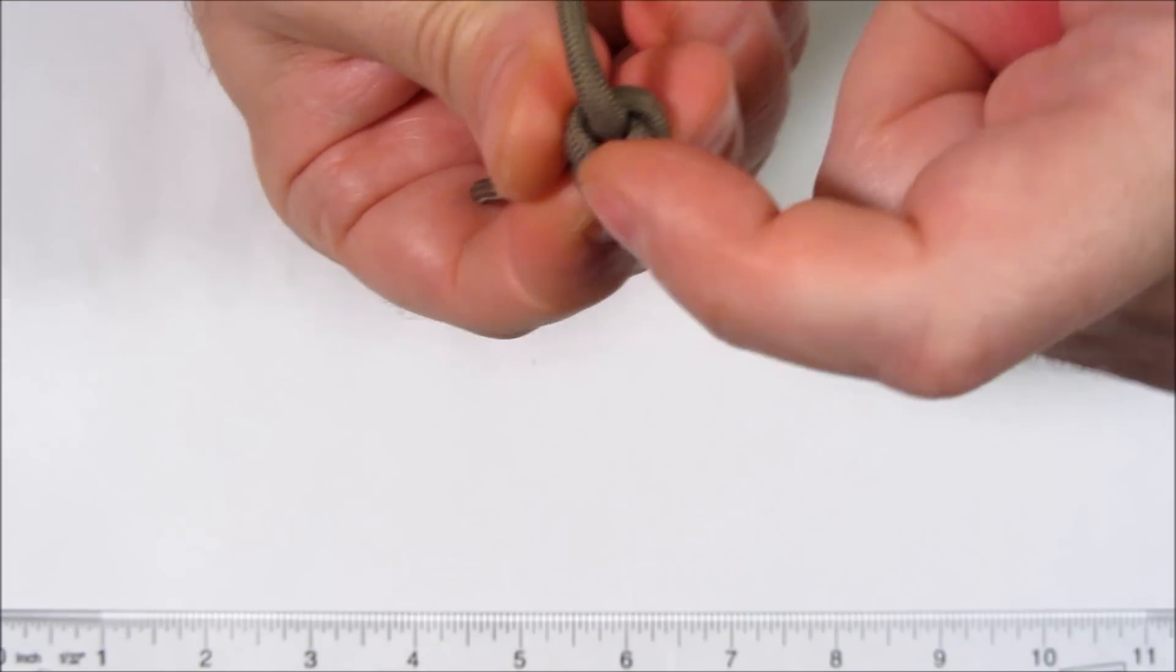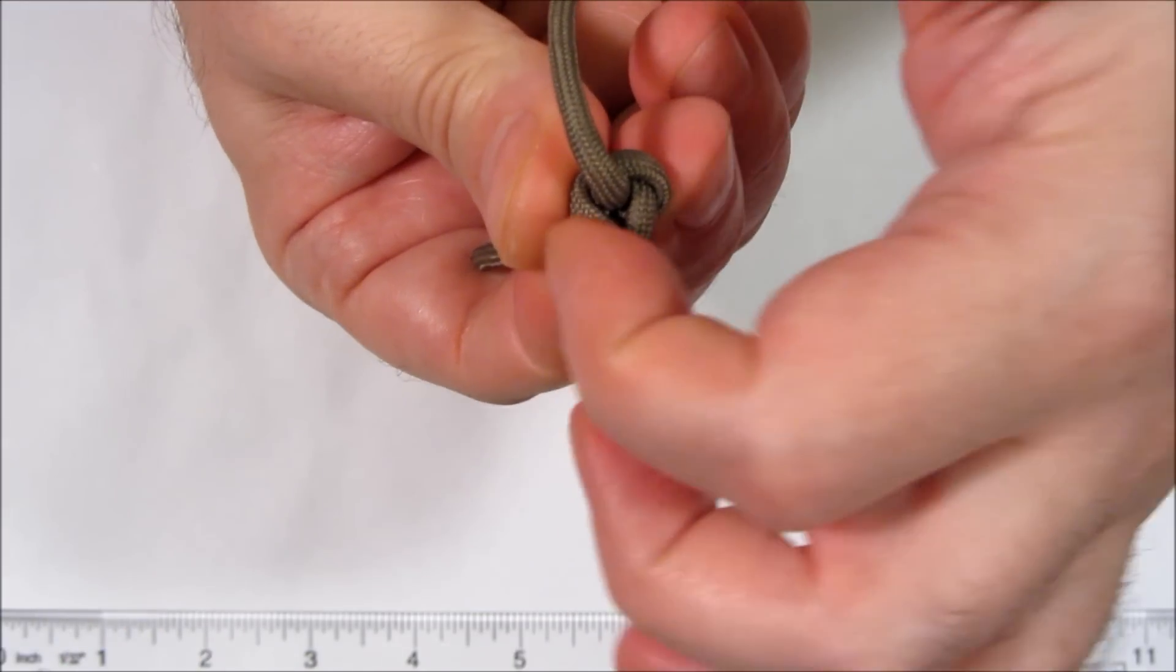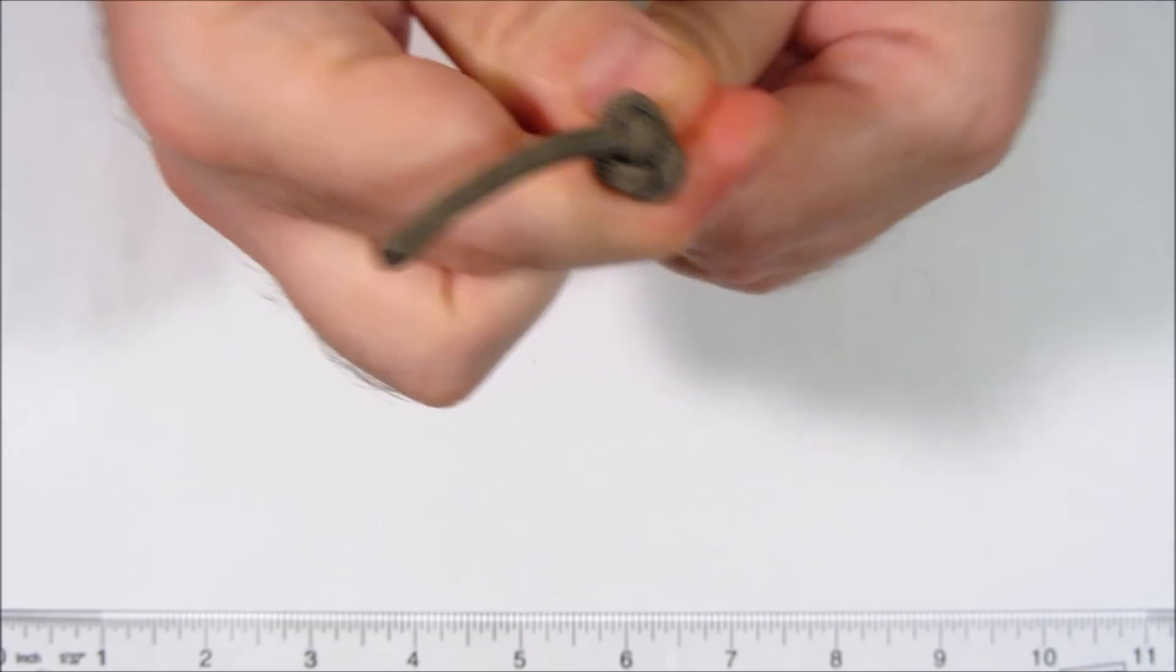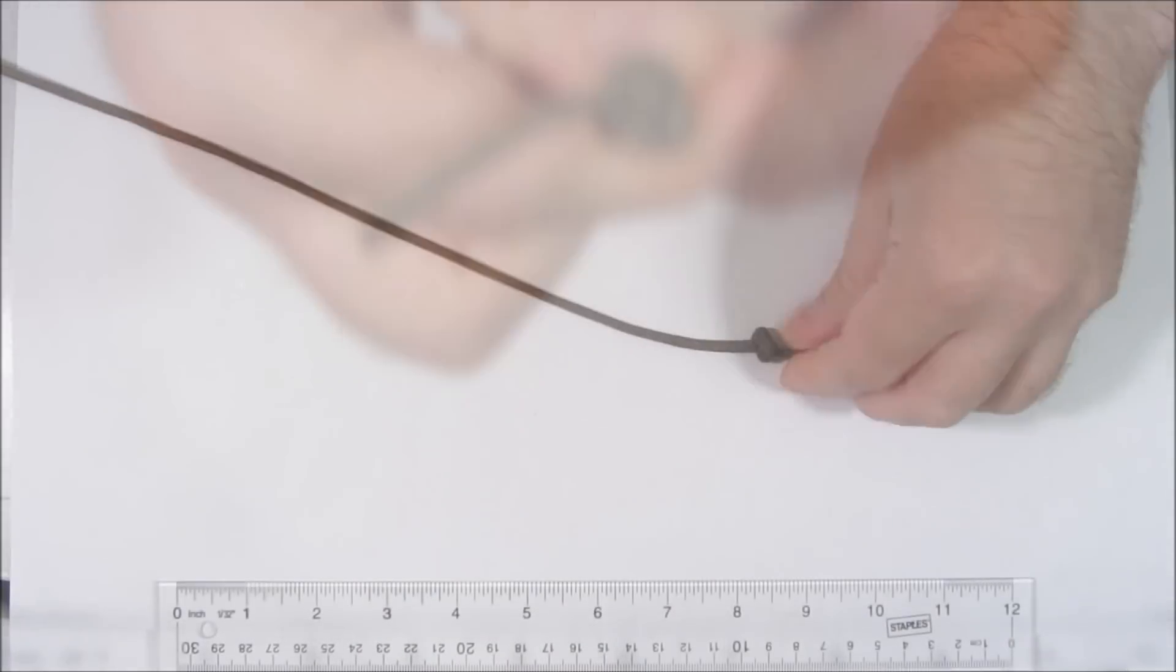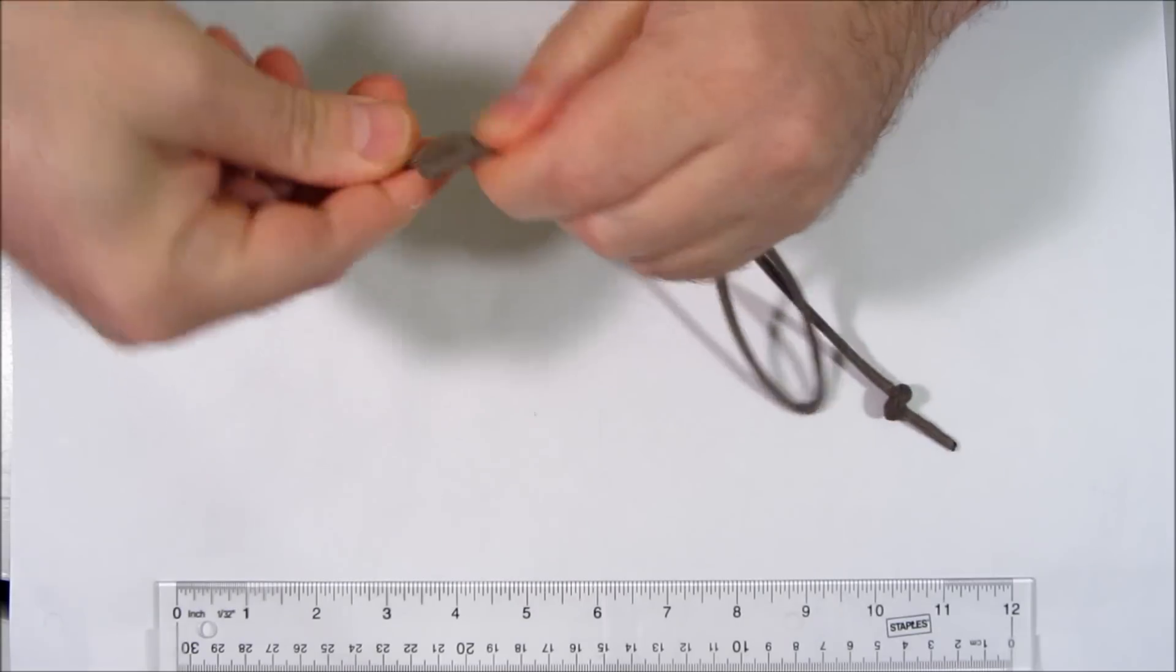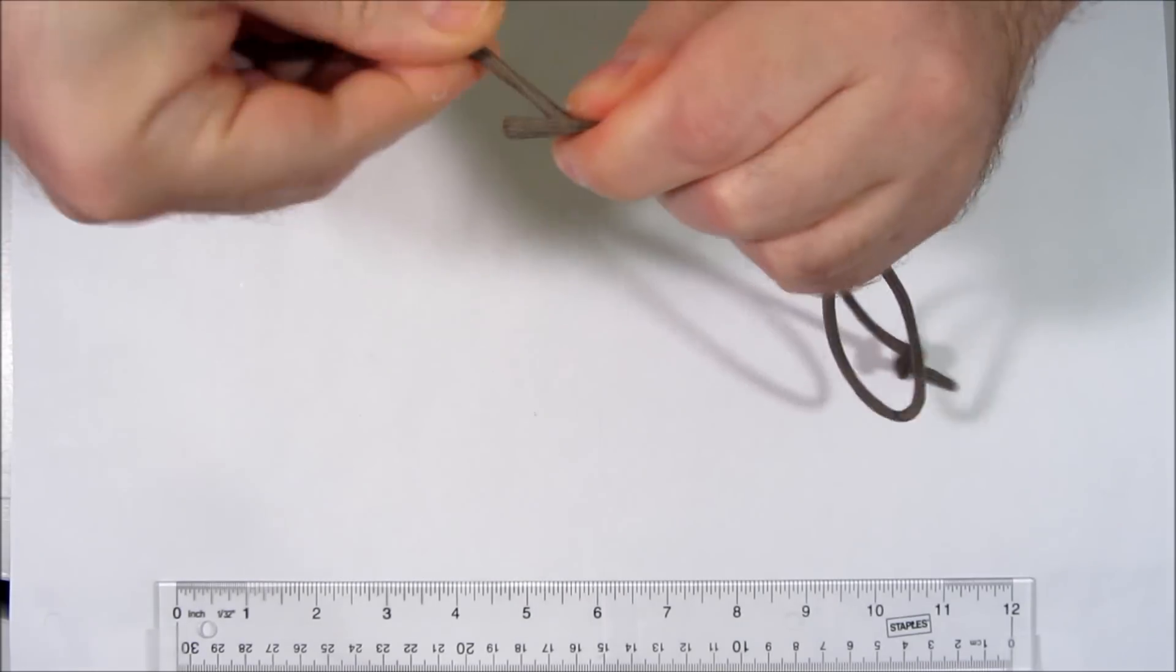The Ashley stopper knot has this nice trefoil, three lobes, and they make a nice even surface when the stopper knot is being pulled on. I have a little Sharpie pre-mark there, so I know exactly how long to start at.